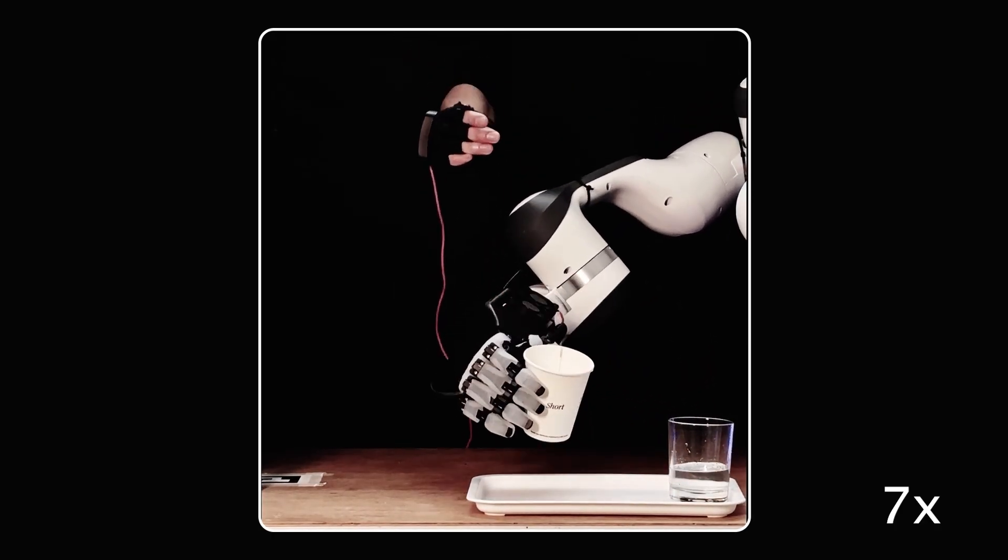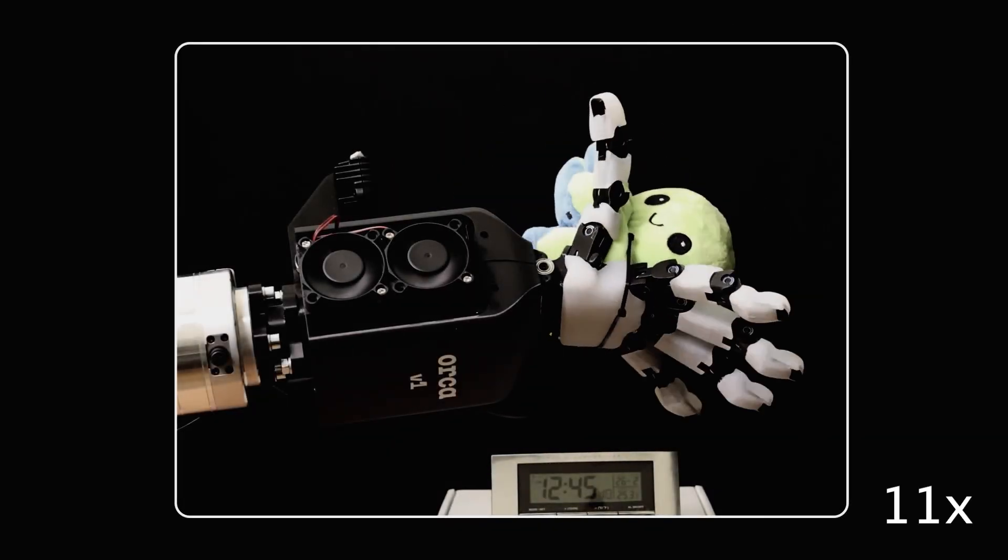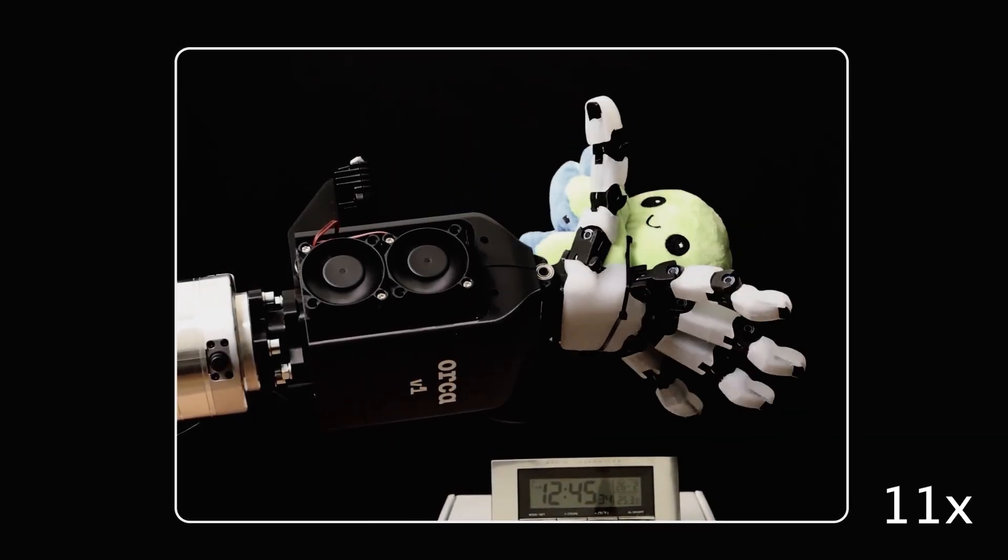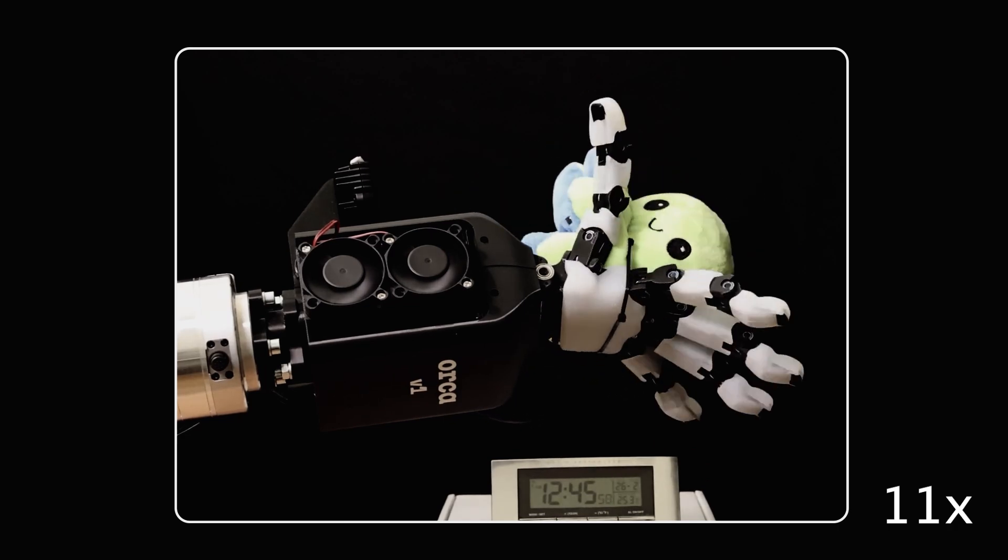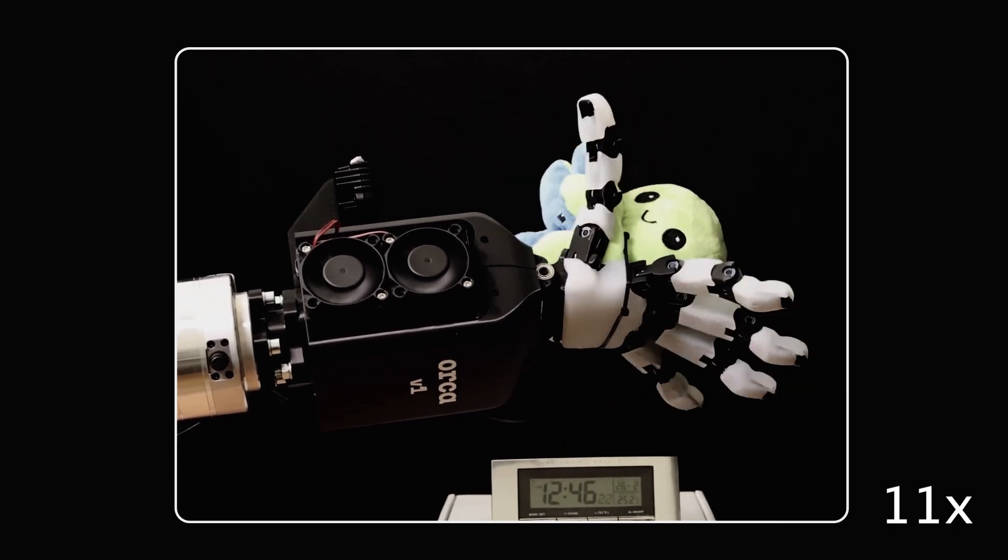A typical downside to tendon-based systems is their reliability over time. In our reliability tests, we could let the Orca hand perform continuous gripping for over 2.5 hours.